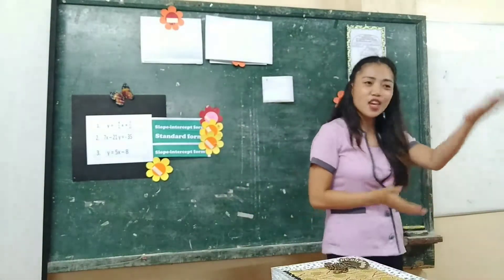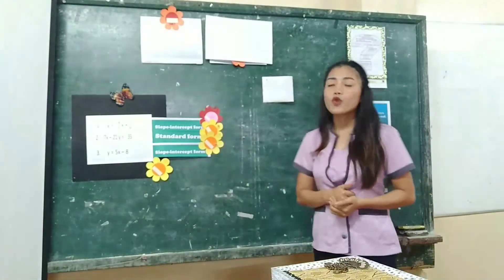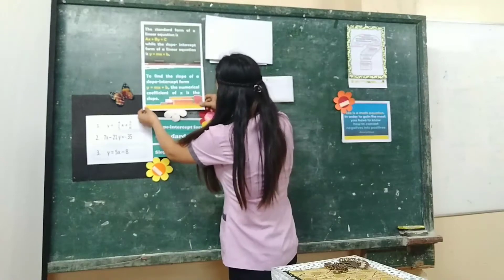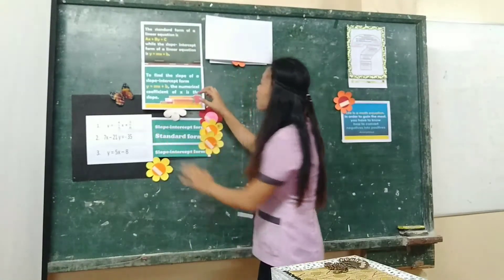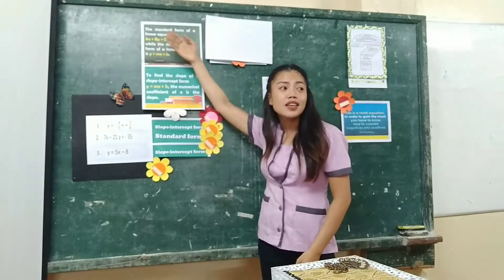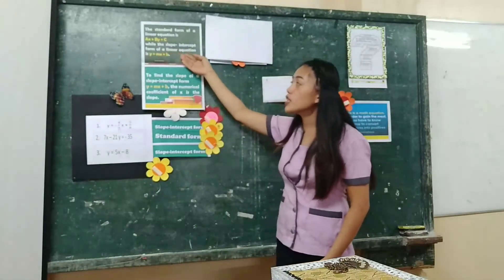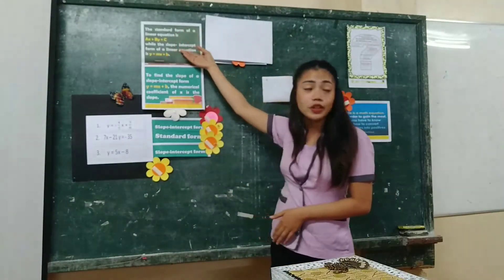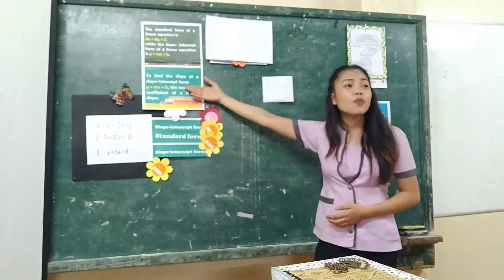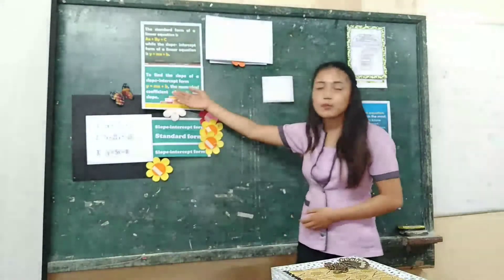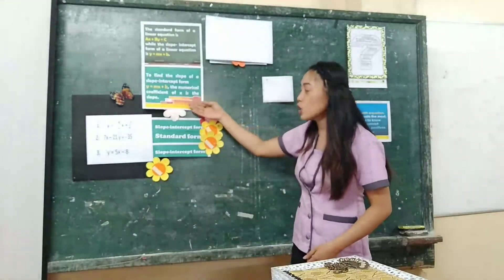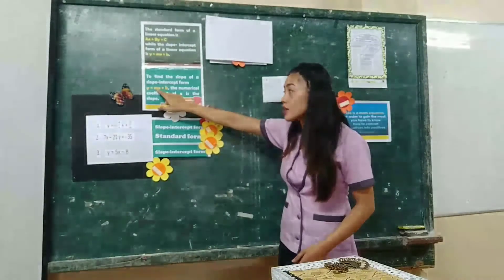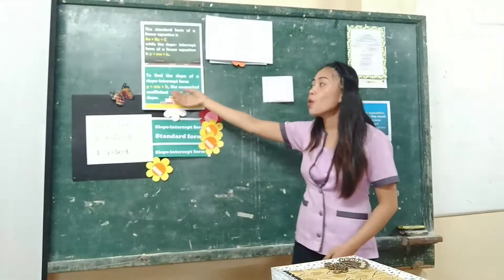Yes, Jericho? Very good. Thank you for sharing your idea on what slope-intercept form and standard form are. Now, when we say standard form of a linear equation, it is in the form ax plus by equals c. While the slope-intercept form of a linear equation is in the form y equals mx plus b. So you can now distinguish standard form and slope-intercept form. To find the slope of a slope-intercept form, y equals mx plus b, it's very easy. The numerical coefficient of x is the slope. So you just have to find m, the numerical coefficient of x. m is our slope if it is in the slope-intercept form. Understand?